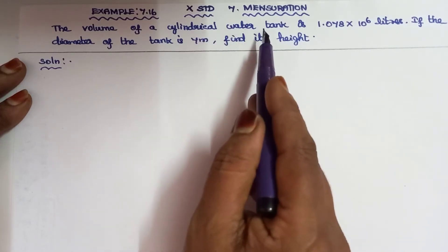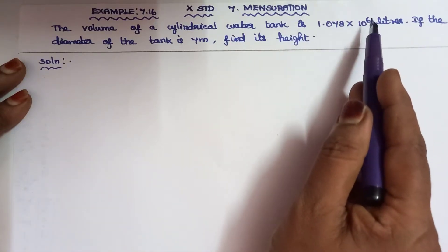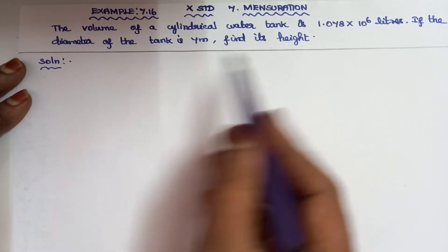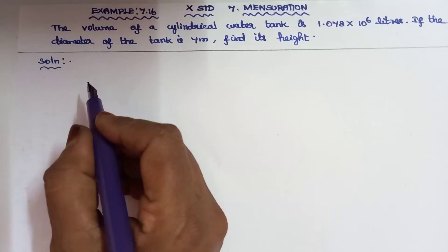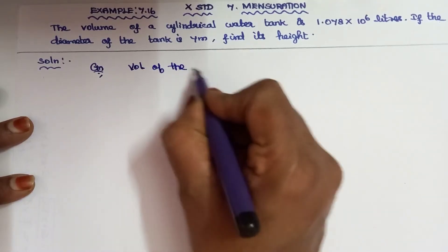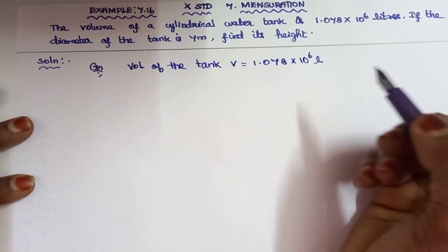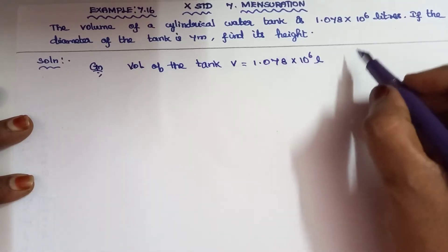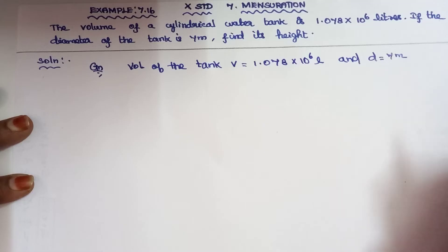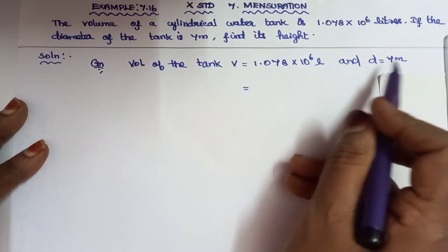Given: the volume of the cylindrical water tank is 1.078 into 10 to the power 6 liters. The diameter of the tank is 7 meters. So volume V equals 1.078 into 10 to the power 6 liters, and diameter equals 7 meters.